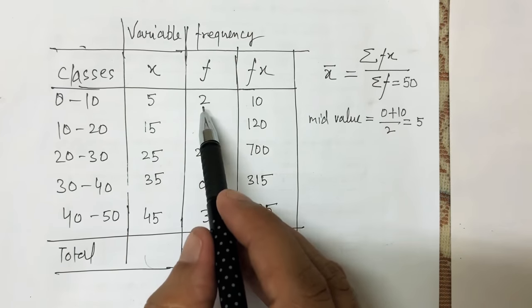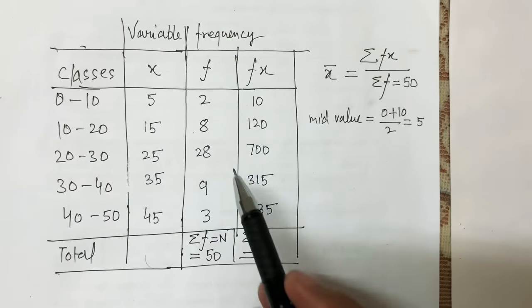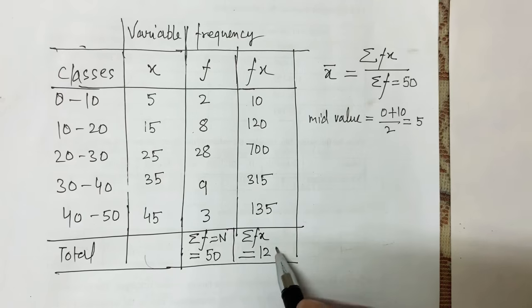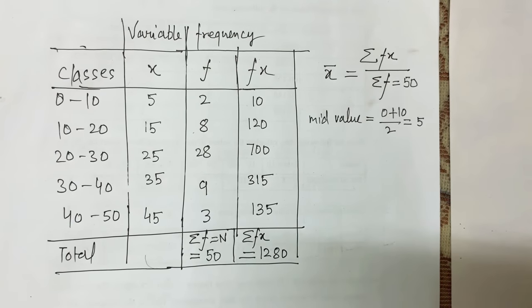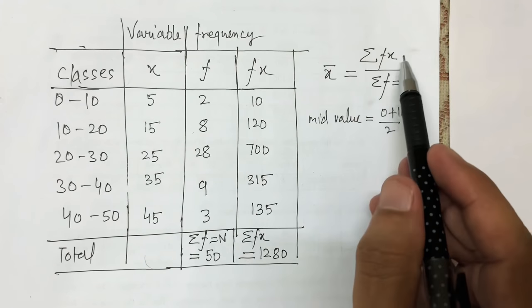Logically, two students scoring five marks each gives total marks of 10. If I sum all fx values, it comes out to 1280 total marks scored by all students.